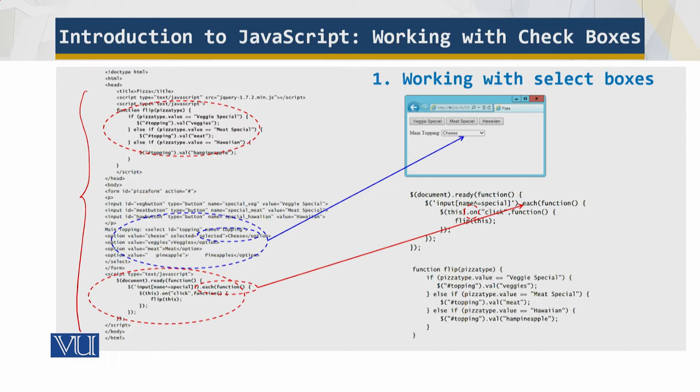The click event handler calls the flip function. The resulting code looks like this. The flip function examines the value of the pizza type variable that gets passed into the function, and then using the conditional, changes the value of the select box called topping.